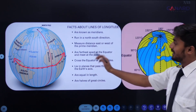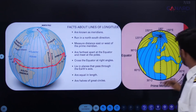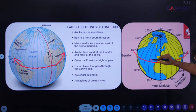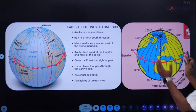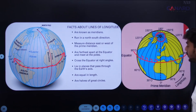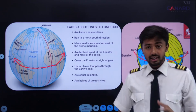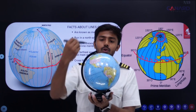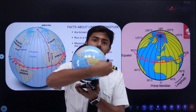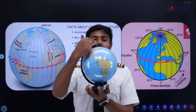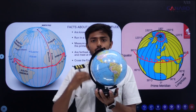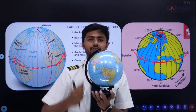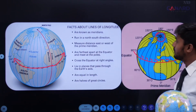They cross the equator at right angles. All these meridians tend to converge at the nearest pole. These are halves of a great circle. So if we consider this as a meridian, this will be its anti-meridian. This meridian and its anti-meridian will both form a great circle. Hence, this meridian will be a half of a great circle. That's all about meridians.